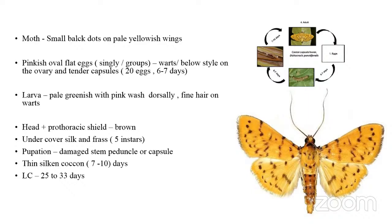The fully grown larva is pale greenish in color with a pinkish wash dorsally and fine hairs all over the body. The head and prothoracic shield are brown. The larval stage may be seen under a cover of silk and frass extending between the capsules. The pest pupates inside the damaged stem, peduncle, or capsule in a thin silken cocoon, emerging as an adult in seven to ten days. The whole life cycle ranges from 25 to 33 days.